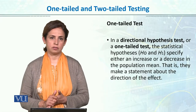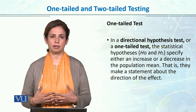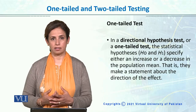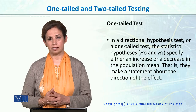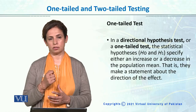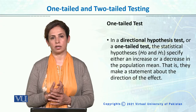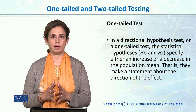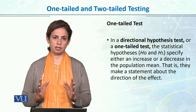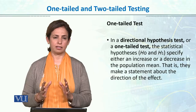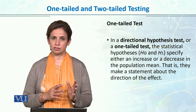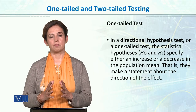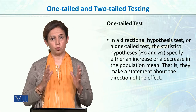We have talked about hypothesis testing — when we determine the critical region, we decide whether the hypothesis is directional or non-directional. If we make it non-directional, we say there could be a difference or there could be an effect, which means it can come to both tails.